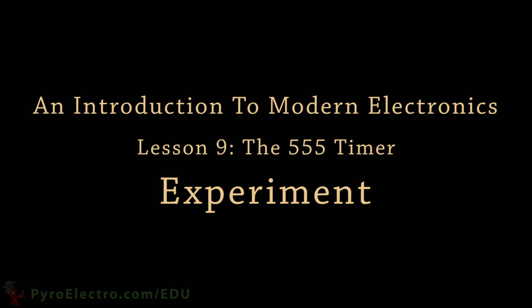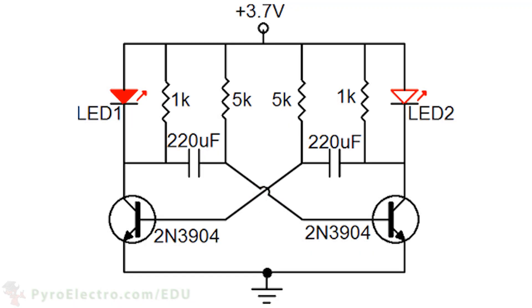Before we experiment with the 555 timer, it's important to understand the reason for needing it. A device similar to the 555 timer is a standard astable multivibrator circuit, which is a circuit that transitions back and forth between two states, similar to how digital electronics transition between 0 and 1.